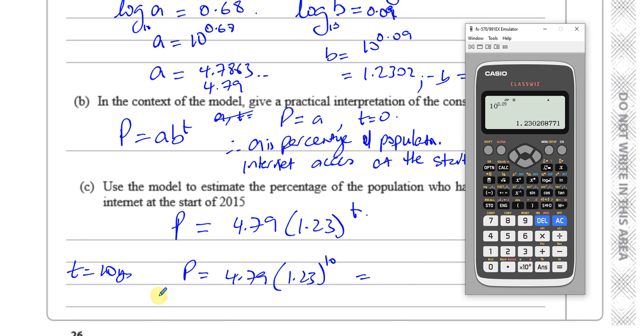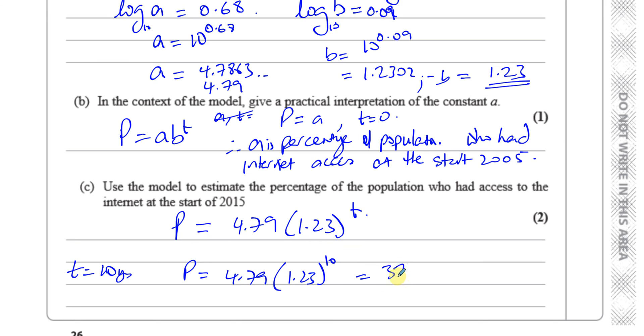So we have to take this value and raise it to the power of 10, and then multiply that by 4.79. That will give us the percentage of the population, which is 38.0%.